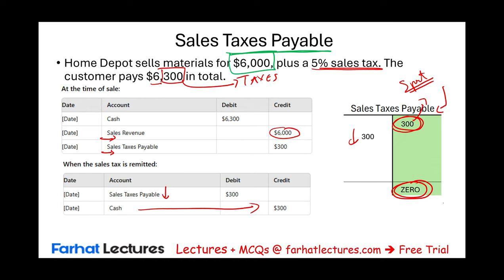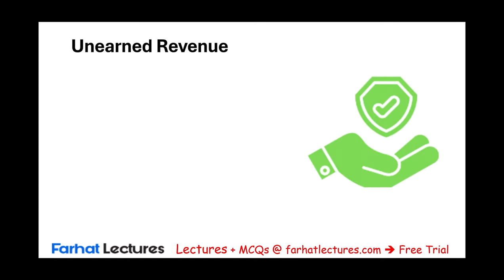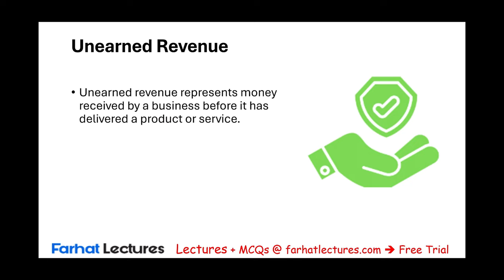Let's look at another liability: unearned revenue, which we also covered under adjustments. Unearned revenue represents money received by a business before they deliver the service. I always say this is a good liability — because someone gave you the money and you have it in hand. All you have to do in return is provide the service, which is what you're supposed to do as a business. It's considered a liability because the business is obligated to provide the service or deliver the goods to the customer.